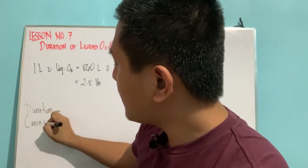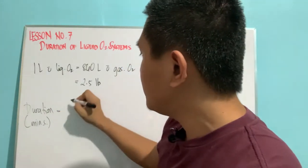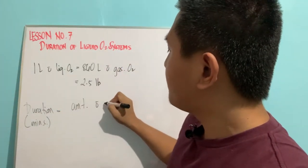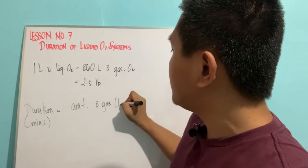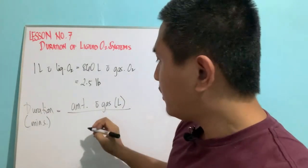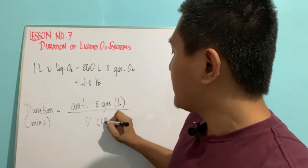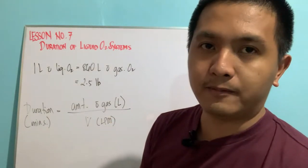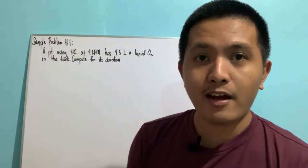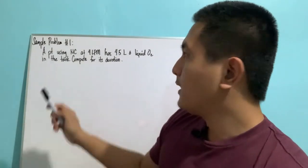The formula for computing the duration of a liquid oxygen system is expressed in minutes. Duration is equal to the amount of gas in liters divided by your flow rate, which is expressed in liters per minute.